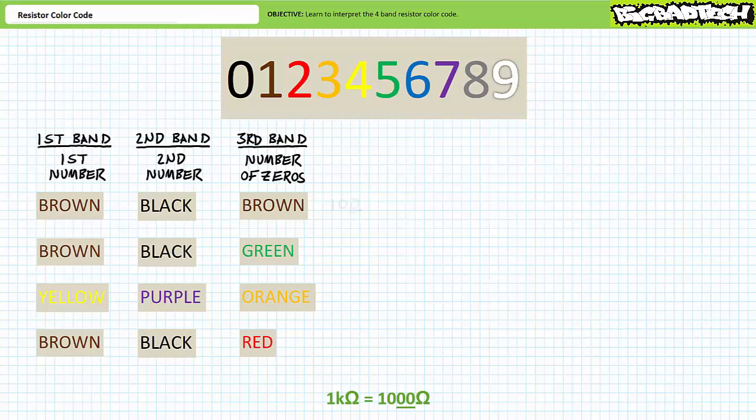Let's work through this first example together. Brown-black-brown means 1,0 with 1,0. Brown-black-green means 1,0 with 5,0s. Yellow-purple-orange means 4,7 with 3,0s. This is obviously not the 1 kilo-ohm resistor we're looking for. Finally, brown-black-red means 1,0 with 2,0s.